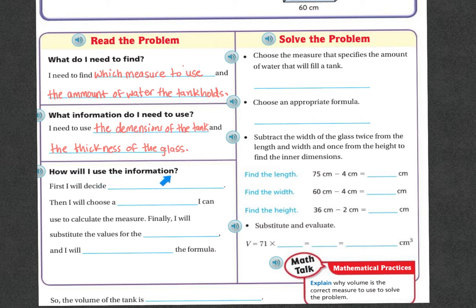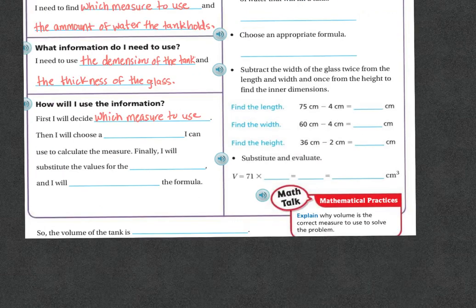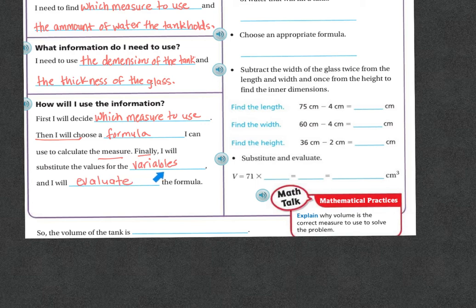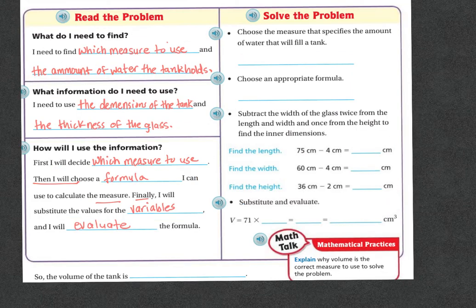How will I use the information? First I will decide which measure to use. Then I will choose a formula that I can use to calculate the measure. Finally, I will substitute the values for the variables and I will evaluate the formula. Choose the measure that specifies the amount of water that will fill the tank. If I'm talking about filling the entire tank, I'm talking about volume.